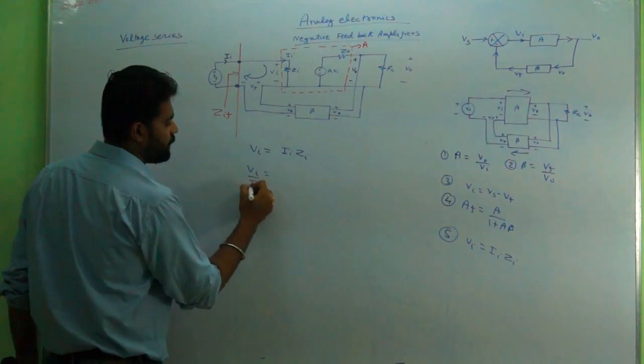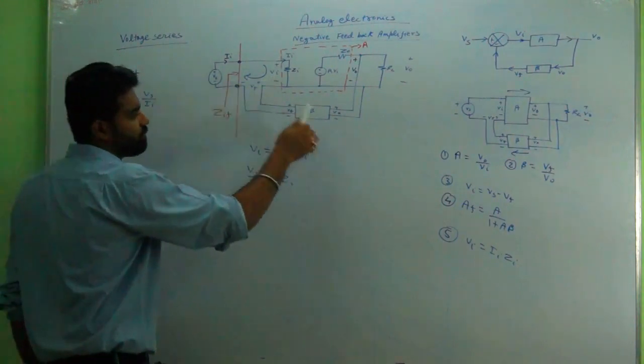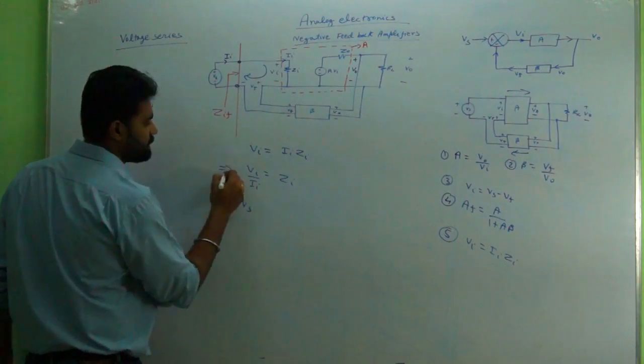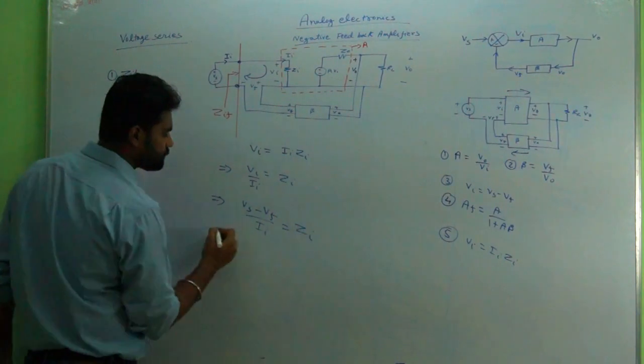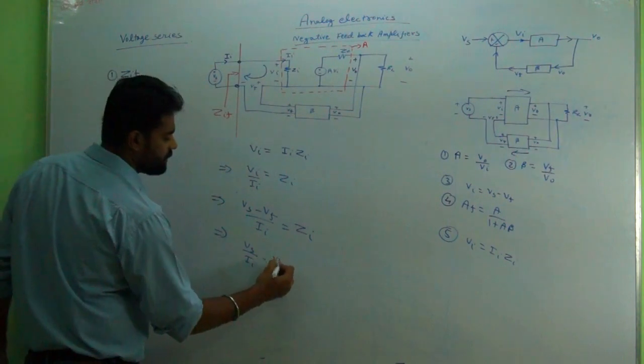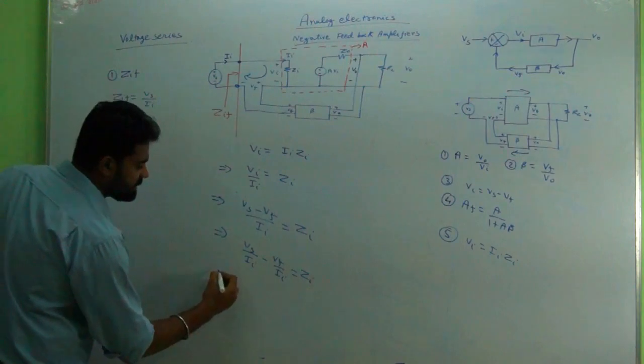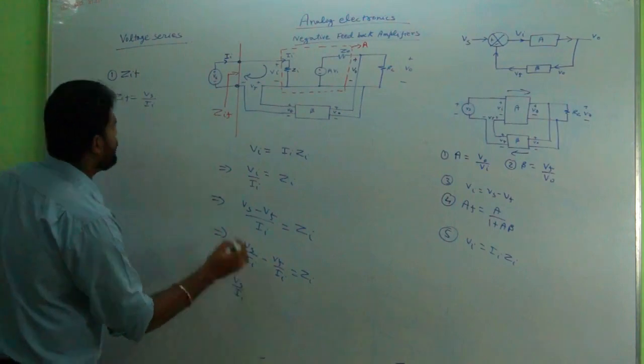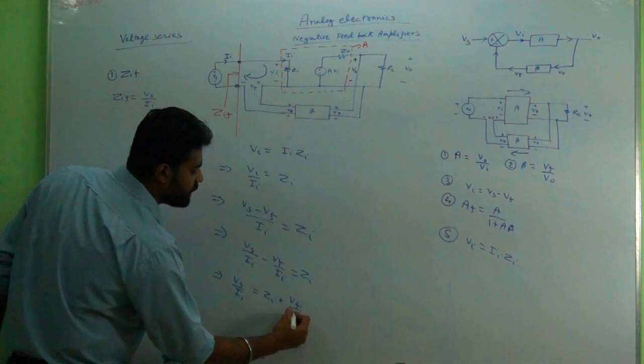I have put Vs/Ii = Zi. Vi can be written from equation number 3 as (Vs - Vf)/Ii = Zi, and that can be written as Vs/Ii - Vf/Ii = Zi, and thus it can be written as Vs/Ii = Zi + Vf/Ii.